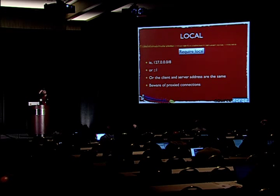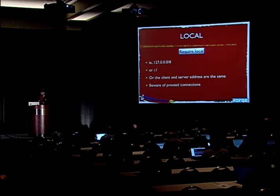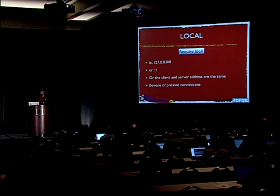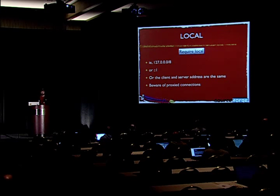There's one special syntax in mod_authz_host: 'require local.' This is more intelligent than simply saying 'require 127.0.0.1' — it will allow any connections from anything in the 127.0.0.1 network, anything with a local host IPv6 address, or even something where the client and server have the same network address. It's really important to remember that if you are proxying content, if you have a ProxyPass back to a service on the same box, then all your connections come from local, so be very careful about using require local in that context.